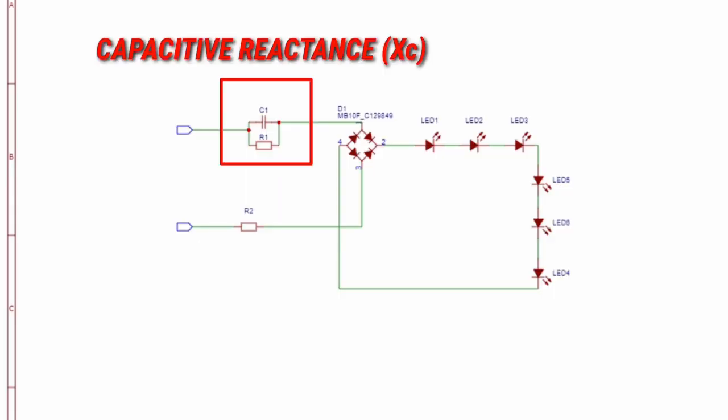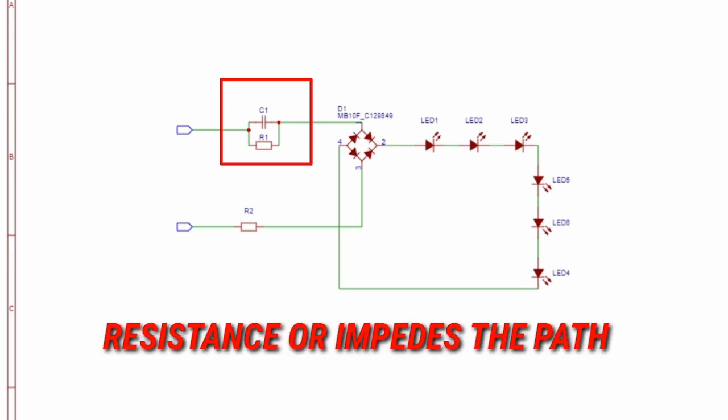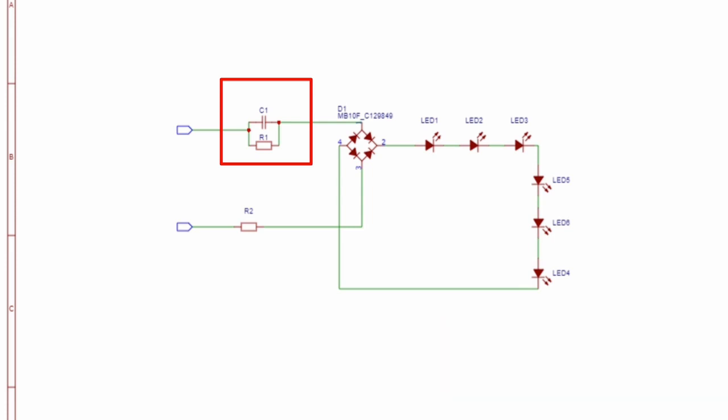As the capacitor has a reactance of 1 upon 2πFC which provides resistance or impedes the path. As talked earlier, we use a 10kΩ resistor to flow 20mA of current through the LED. The same applies here; now the value of R will become the value of Xc which is 10kΩ and the value of C is equal to 6.2μF.